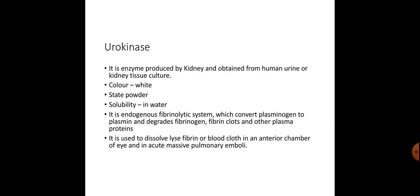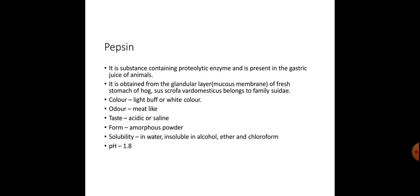Urokinase is an enzyme produced by the kidney and obtained from human urine or kidney tissue culture. Color: white; state: powder; solubility: in water. It is an indigenous fibrinolytic system which converts plasminogen to plasmin and degrades fibrinogen, fibrin clots, and other plasma proteins. It is used to dissolve fibrin or blood clots in the anterior chamber of the eye and in acute massive pulmonary emboli.